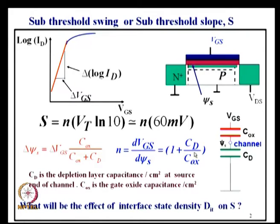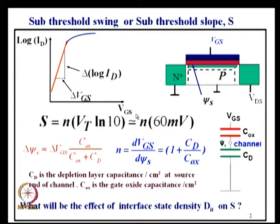This is a repetition of what I said last time because I am continuing on that. The sub-threshold region has an exponential characteristic, which you have already heard a number of times, and on a log scale it will be linear. We also saw that the sub-threshold slope or sub-threshold swing is 60 millivolts into n, where 60 millivolts is kT/q times ln(10). We also saw that n is nothing but an indication of how good the coupling of the gate is with respect to the channel.